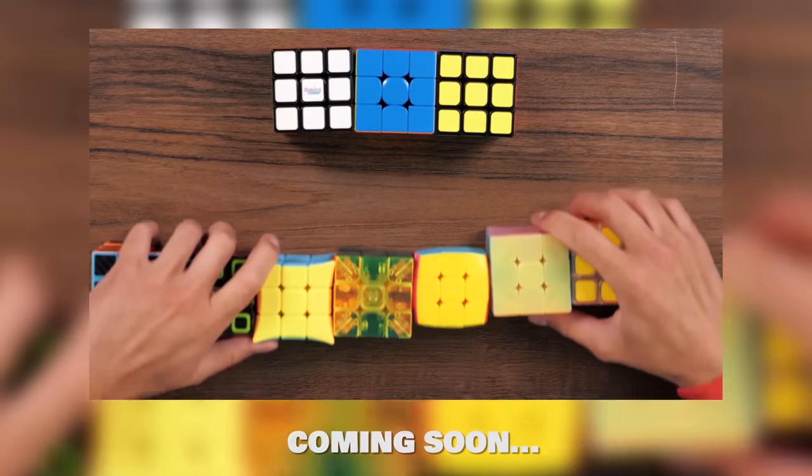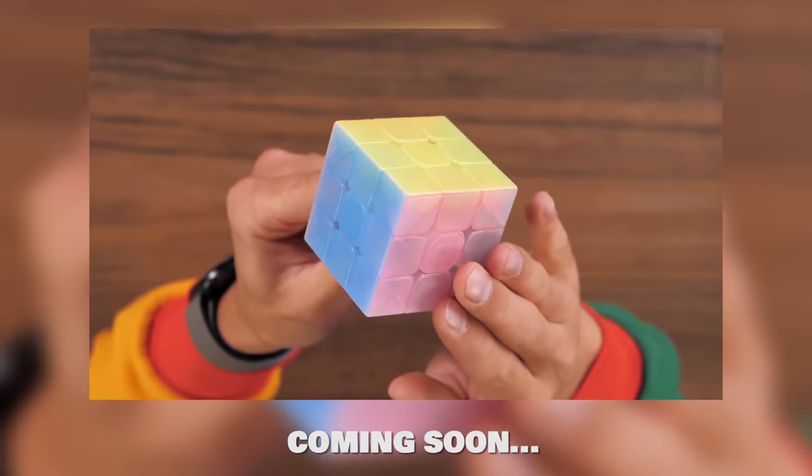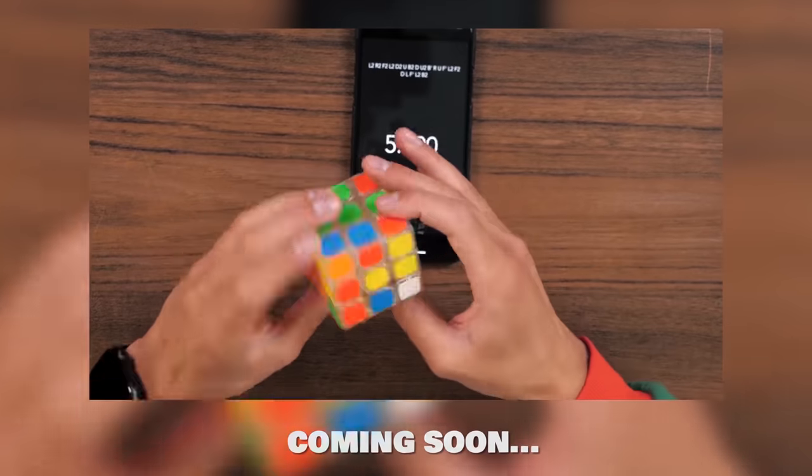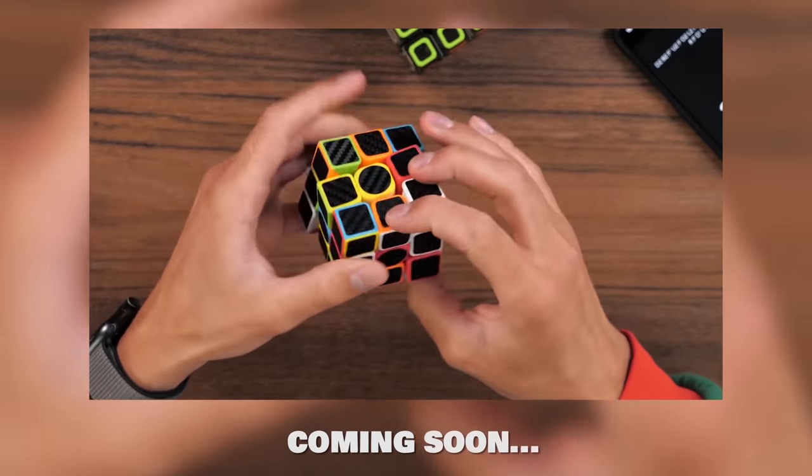Folks, in one of the next videos I will show you 8 incredibly beautiful modifications of 3x3 Rubik's cubes. Transparent, glass, convex, carbon, marble and so forth. Don't miss out.